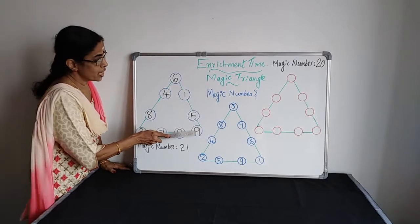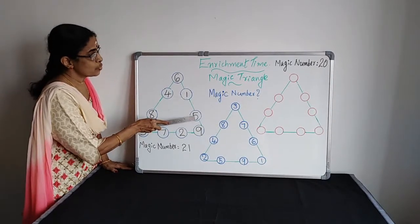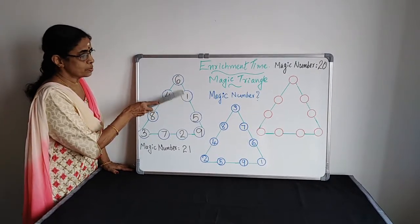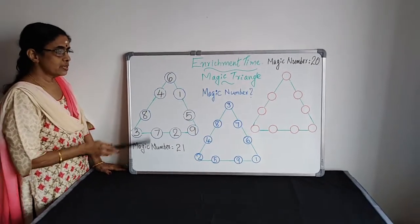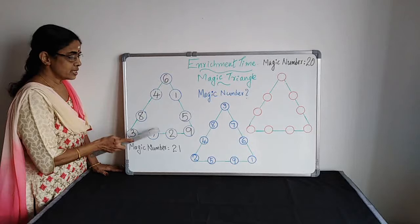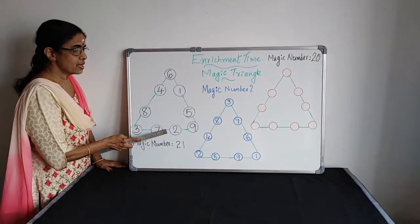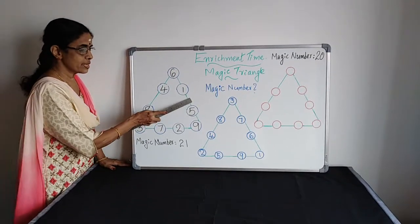Third side. 9 plus 5, 14. 14 plus 1, 15. 15 plus 6, 21. If you are getting sum of the first side equal to sum of the second side and again it is equal to sum of the third side.